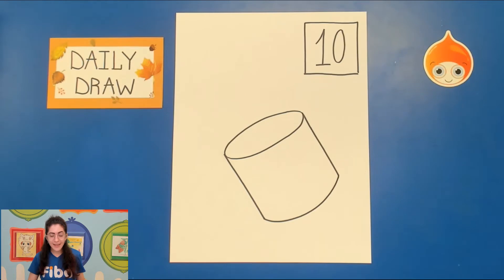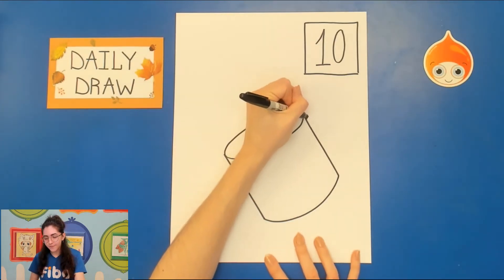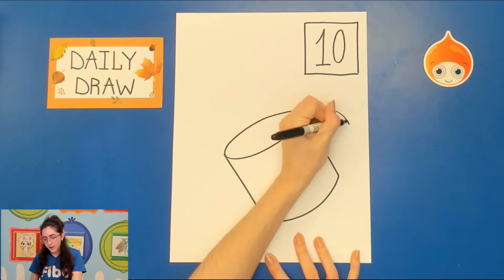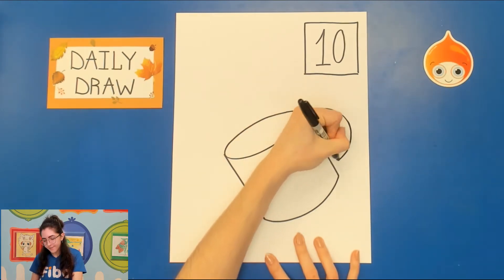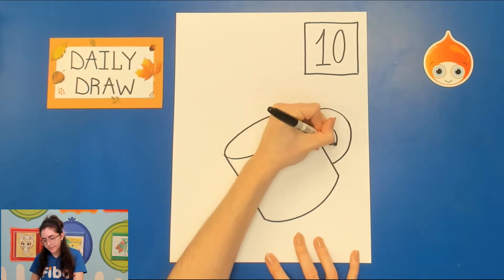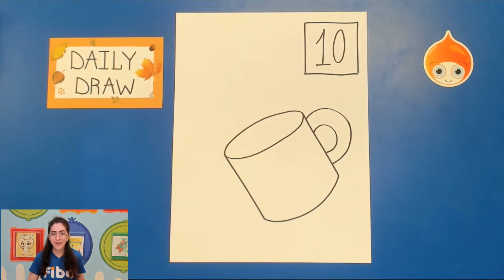Now we need a handle for this cup. You could exclude a handle if you want to but cider is usually served warm so you don't want to burn your hand when you're trying to hold the cup. So let's go ahead and draw a curved line on the side here and another curved line in the middle just to give a nice good handle.